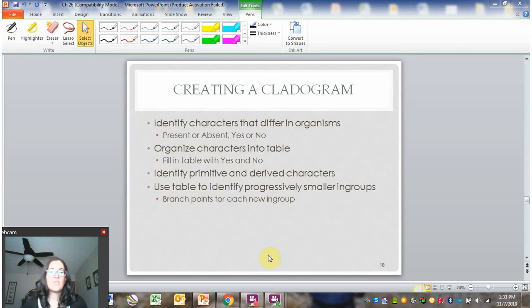As you're looking at the table and seeing those patterns, you're going to be looking for primitive and derived characters. So what are the traits that everybody has within the table and where do you have groups or organisms that have the trait and others don't? That will allow you to establish progressively smaller and smaller in-groups. You ideally want to go like one organism at a time.